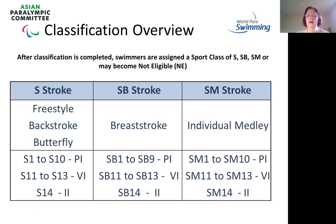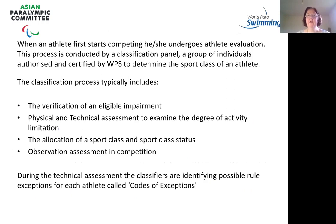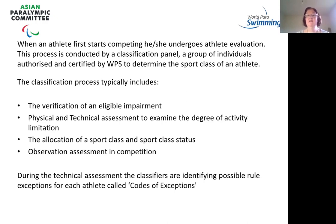SB has only classes 1 to 9 for the PI because breaststroke is very heavily leg-dominated, and the categories on the leg weighting mean there's only a range of nine classes rather than the 10 we have for all other strokes. When an athlete starts competing at their first competition, they'll undergo the athlete evaluation, conducted by the classification panel, who are all authorised by World Paraswimming to determine the sport class. It takes a two-stage process: the verification of the impairment is done beforehand, so each NPC or national federation must submit medical evidence when applying for classification.